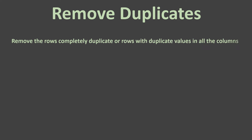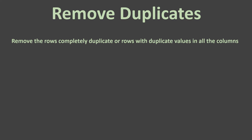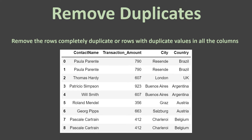The first scenario is to remove rows which are completely duplicate — rows with duplicate values in all the columns. Here we have a table with four columns and nine rows, and the two rows I have selected are completely duplicate of each other. This is the condition where you might like to remove rows that are completely duplicate, meaning they have the same values in all columns.